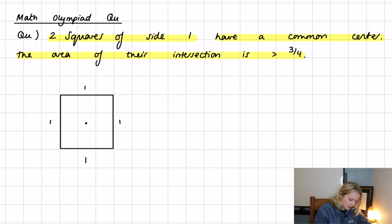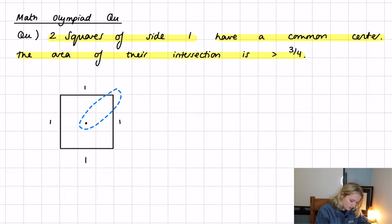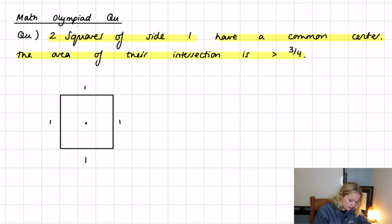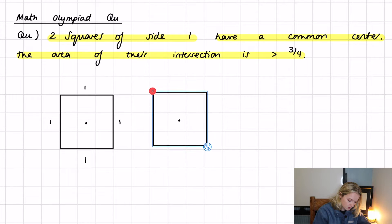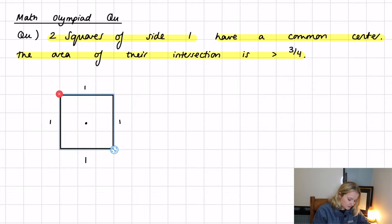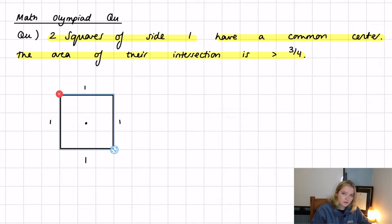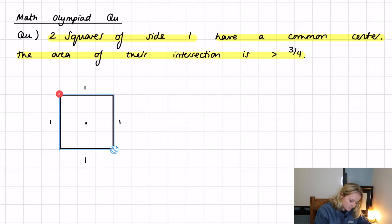I'll copy another square so when we rotate it's easy to see. Both their centers are common, so we overlap — there is an intersection, of course, because they're on top of each other. When a square sits exactly on top of another, the area of intersection is simply one, since the area of each square is one times one.